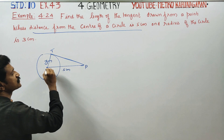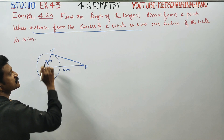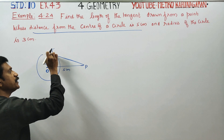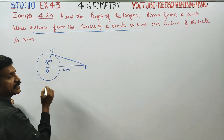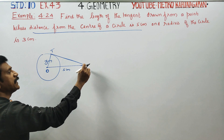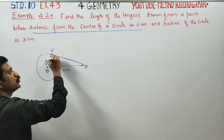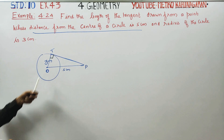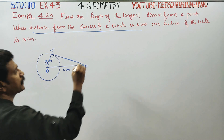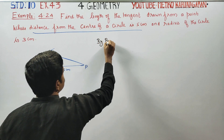The distance is from the center to the point, and the radius meets the point of contact. The tangent and radius meet at the point of contact at 90 degrees. So we can use the Pythagoras theorem to find the length of the tangent.